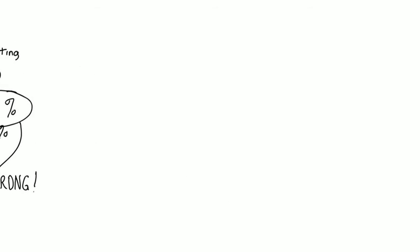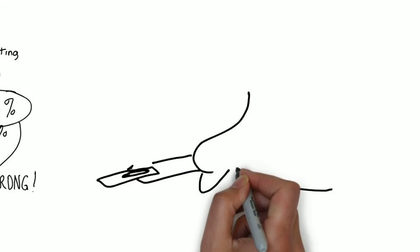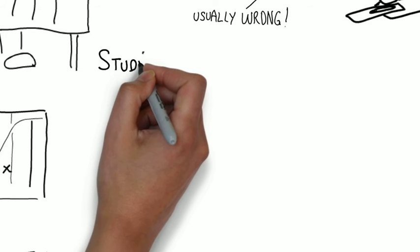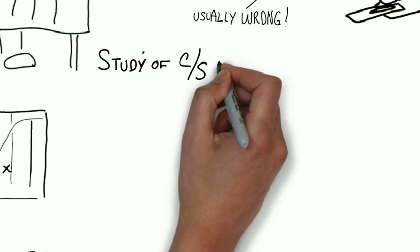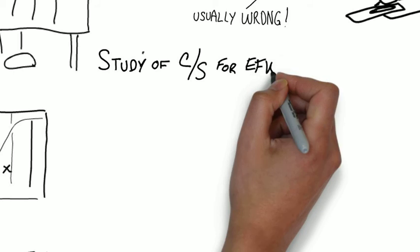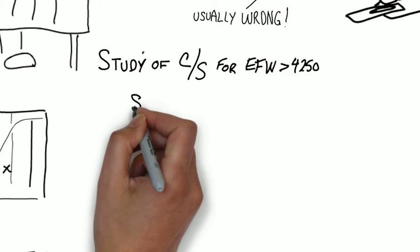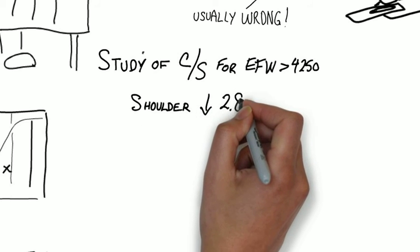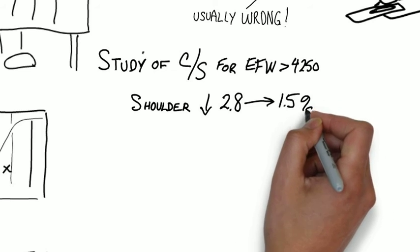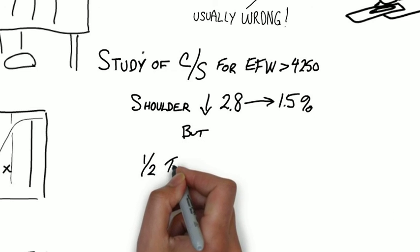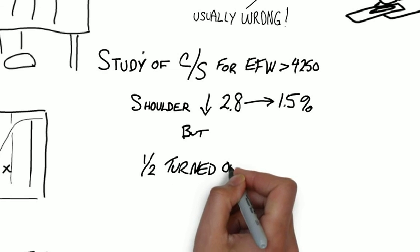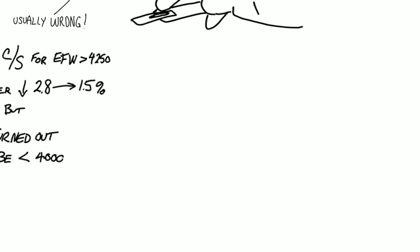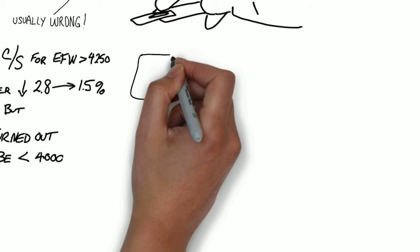When should cesarean section be considered? A study where cesarean section was performed for fetuses estimated to be greater than 4,250 reduced the shoulder dystocia rate from 2.8 percent to 1.5 percent, but half of the fetuses estimated to be greater than 4,250 were actually less than 4,000 grams. The bulletin admits that although the positive predictive value of fetuses over 5,000 grams is poor, and the lack of evidence supporting cesarean section at any estimated fetal weight, most authors agree that consideration should be given to c-section if the estimated fetal weight is greater than 5,000 grams or 11 pounds.